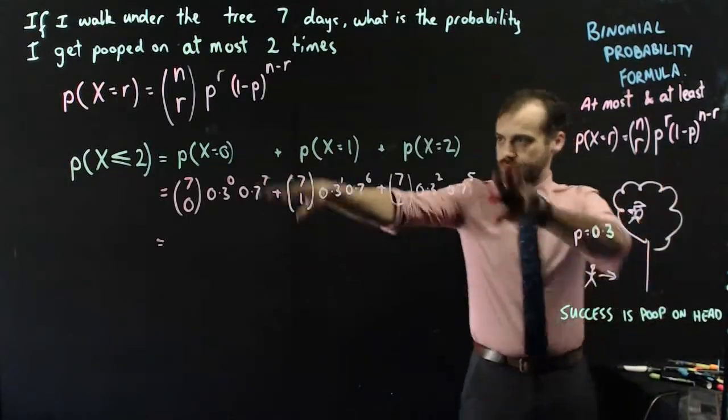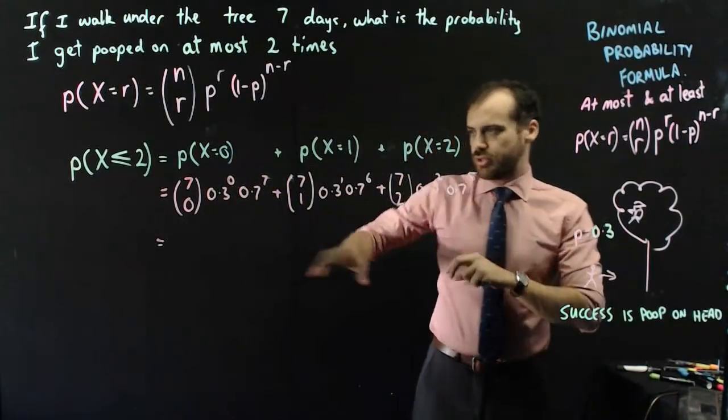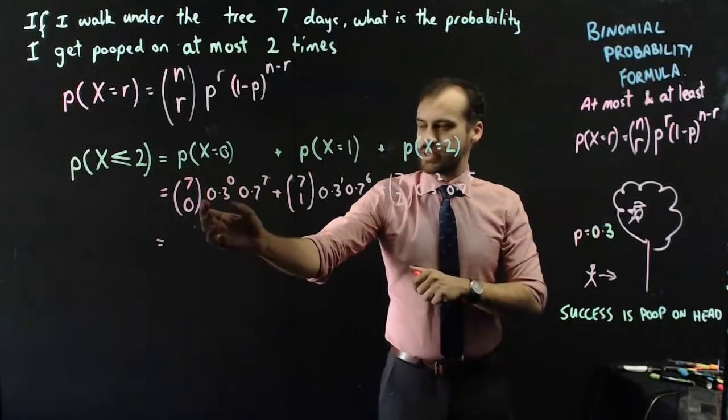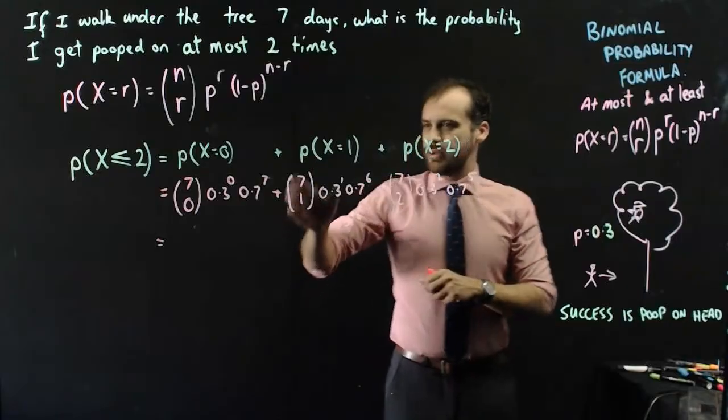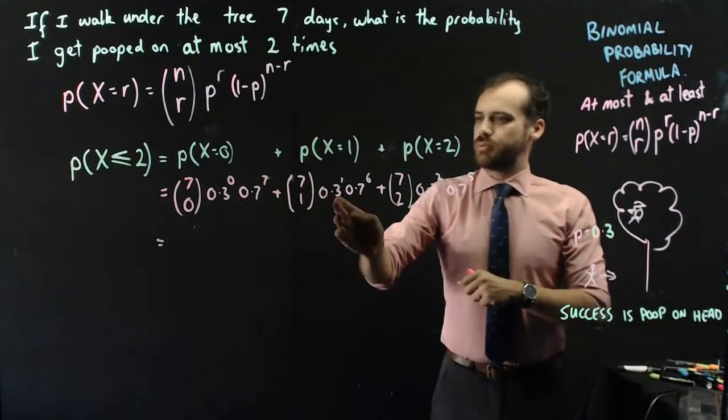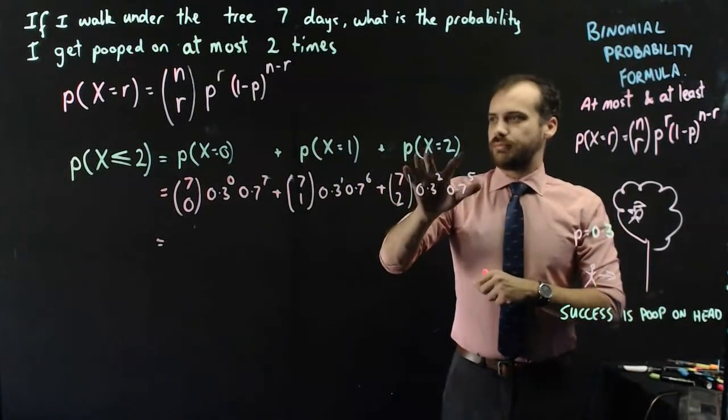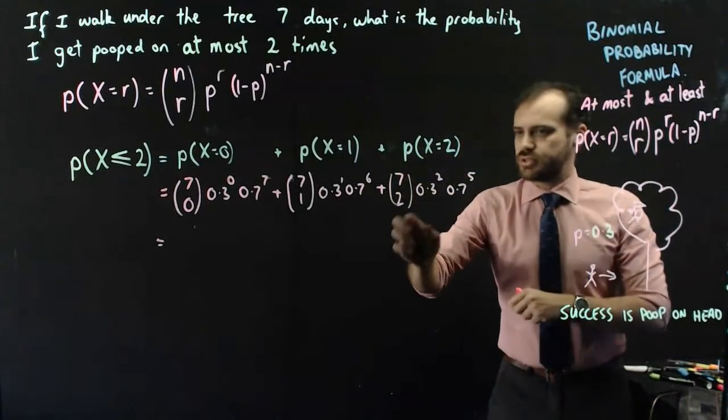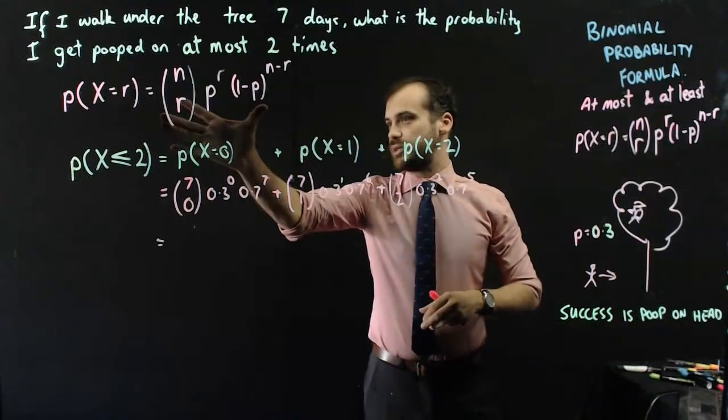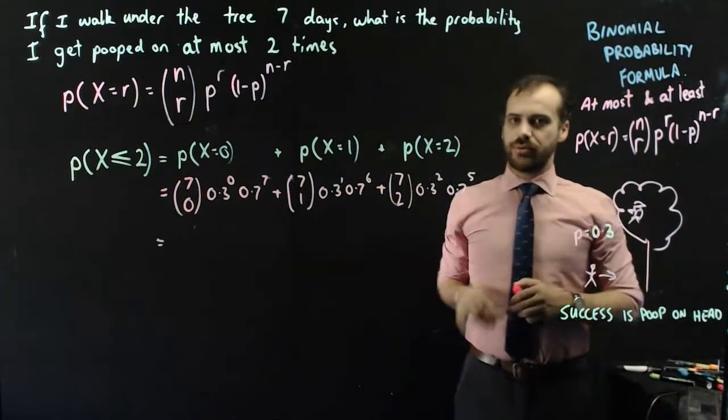All right, so I've spread that out a little bit, and here's our three formulas. The probability that x equals 0 is (7 choose 0) times 0.3 to the 0, remember that's 1, times 0.7 to the 7. The probability that I get pooped on once is (7 choose 1) times 0.3 to the 1, times 0.7 to the 6. And the probability that I get pooped on twice is (7 choose 2) times 0.3 squared, times 0.7 to the 5.